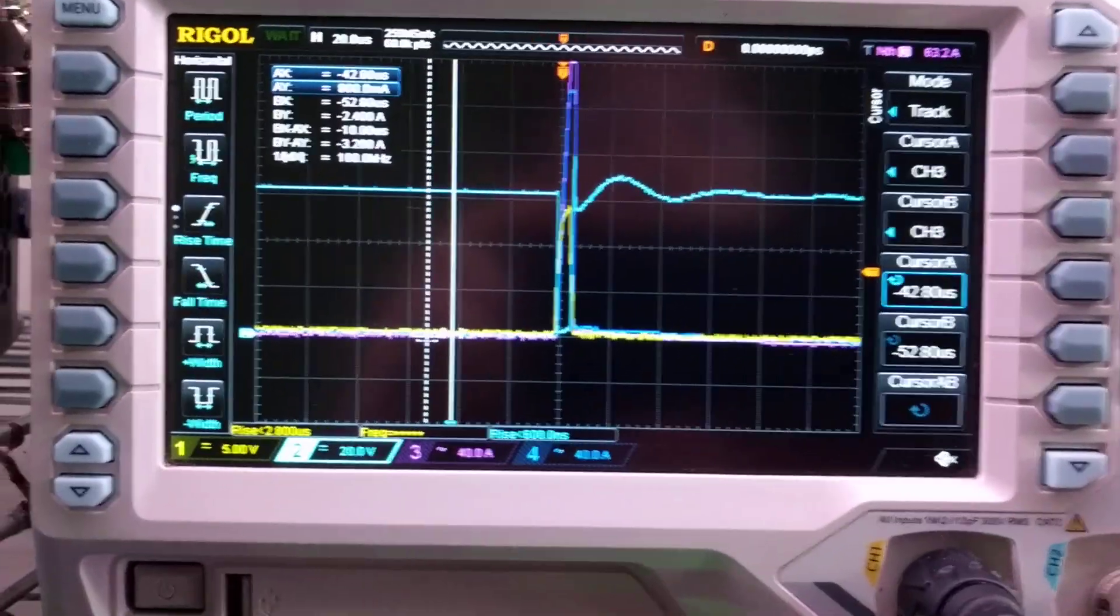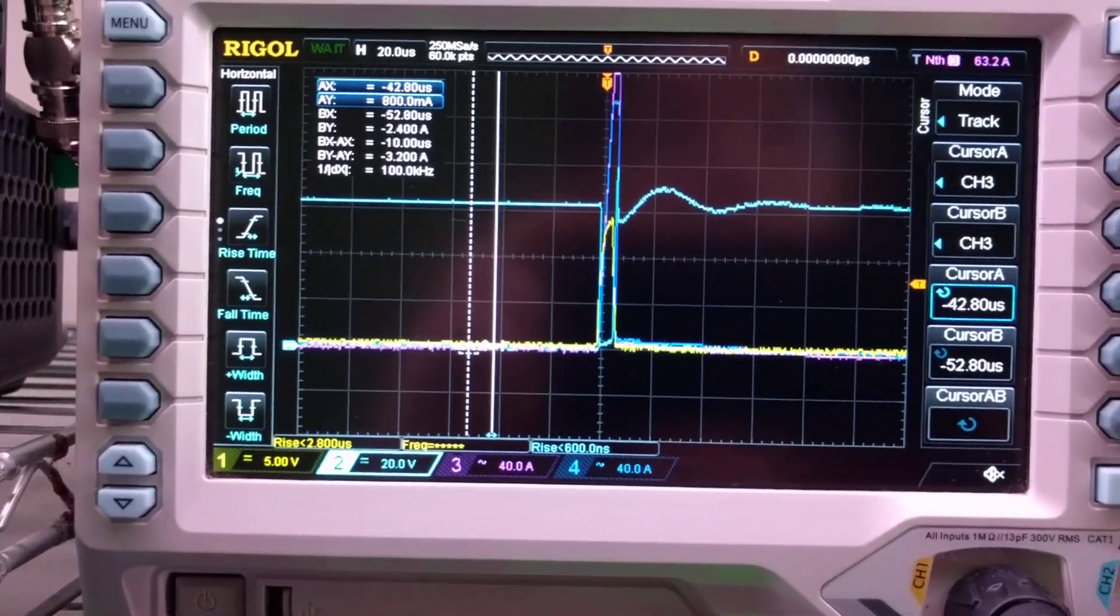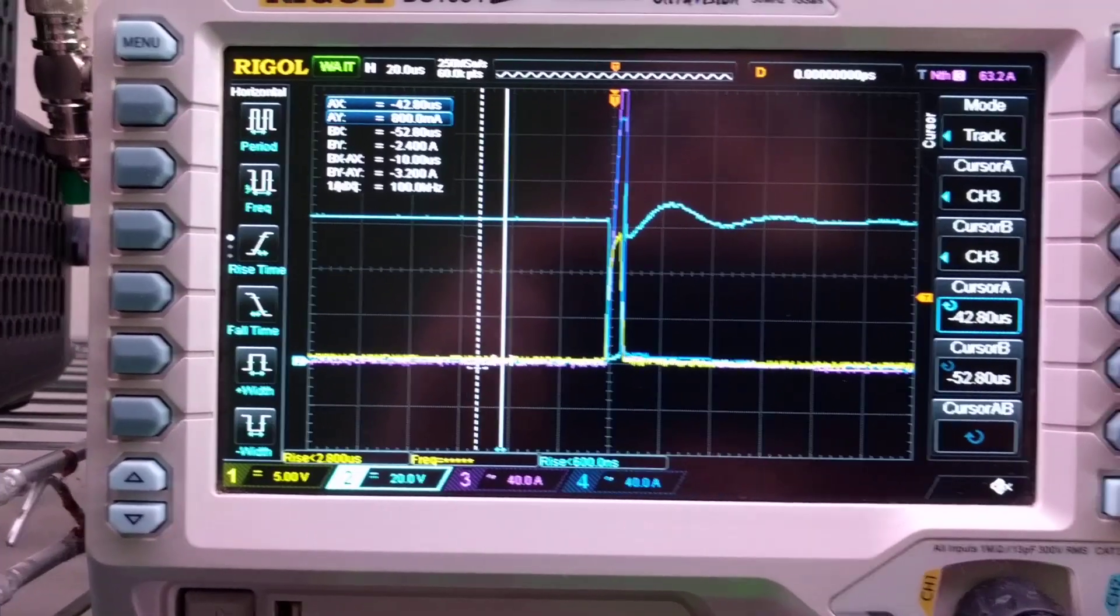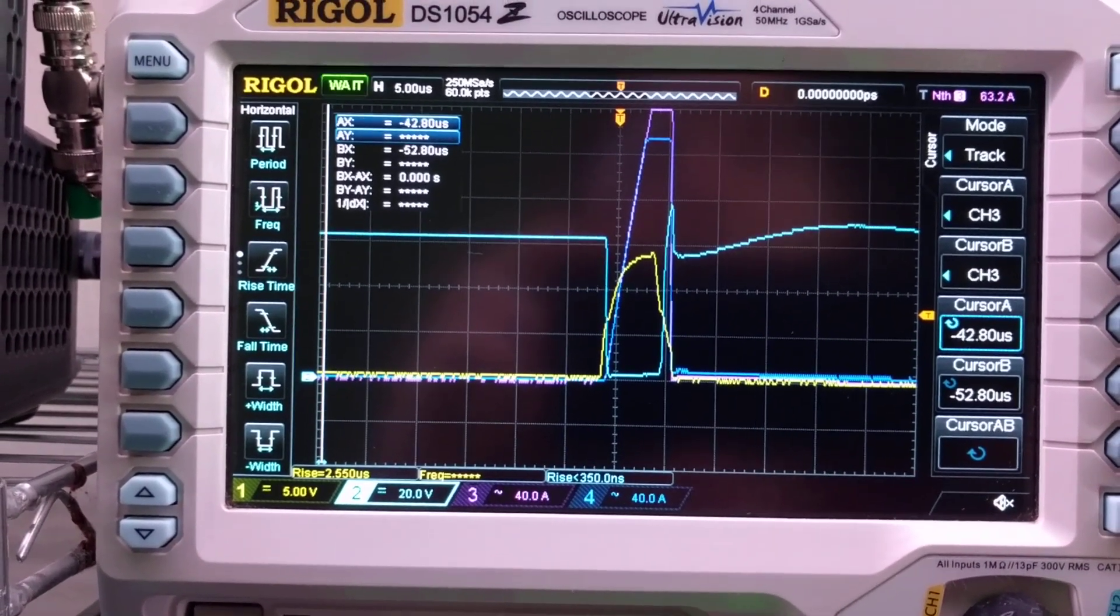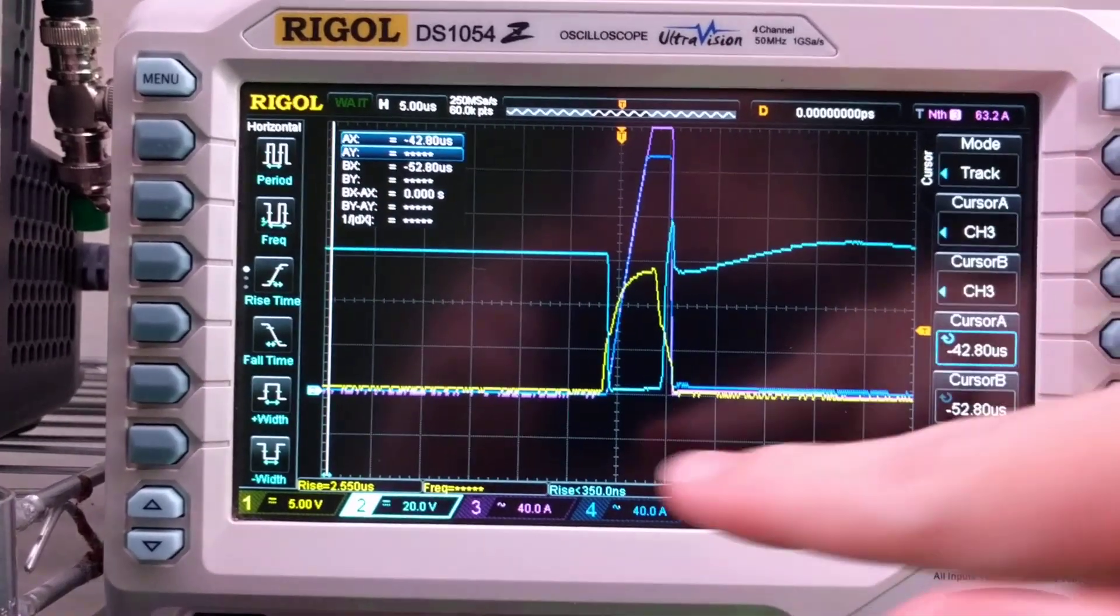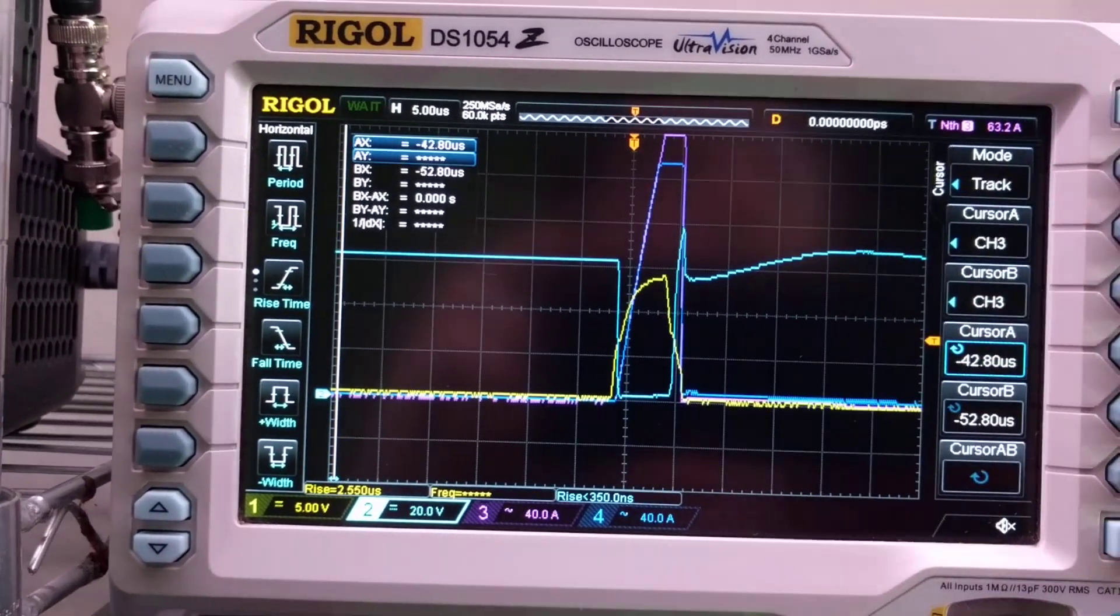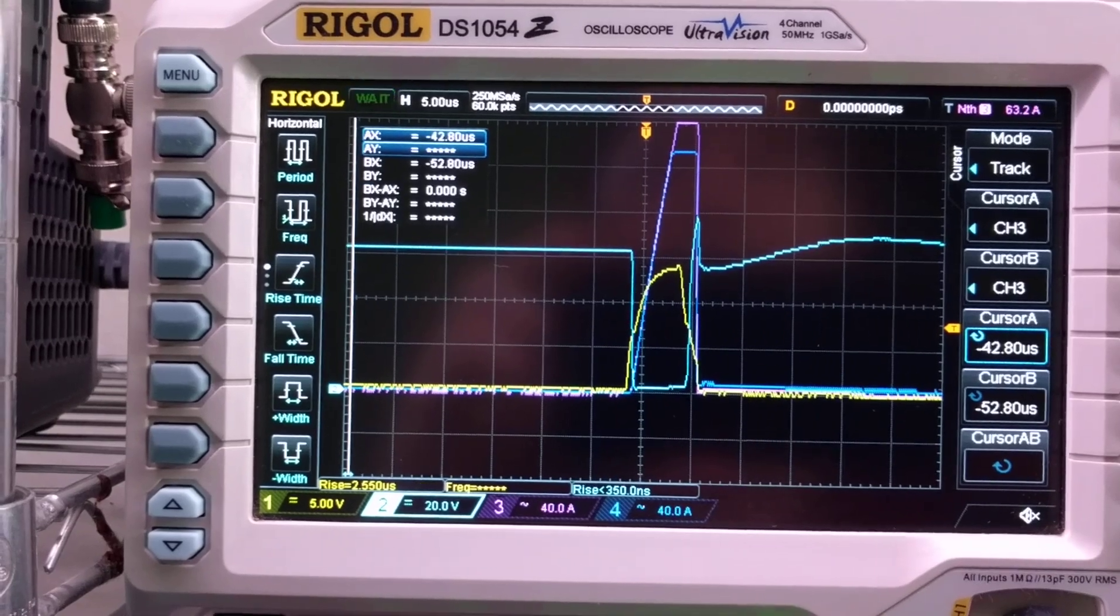Alright, there we go. There is the DSAT event. And you can see it shuts it off right away. That is 5 microseconds from here to here, roughly. So it shuts it down in about 6 microseconds.